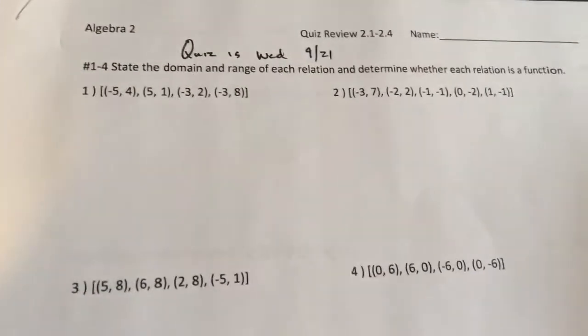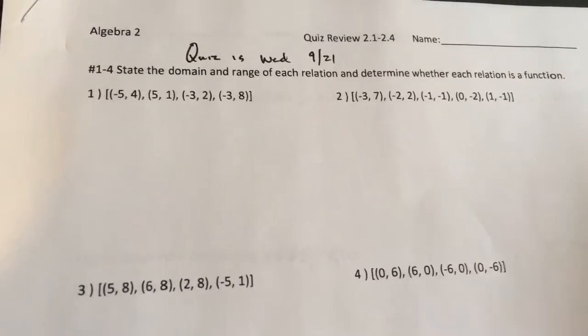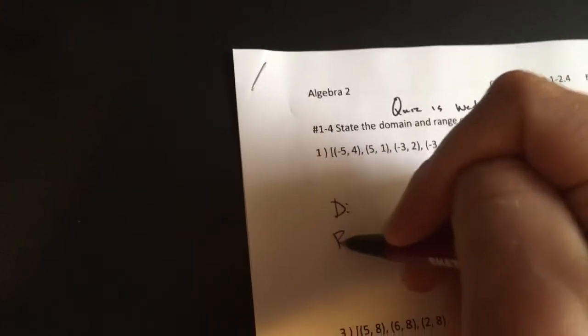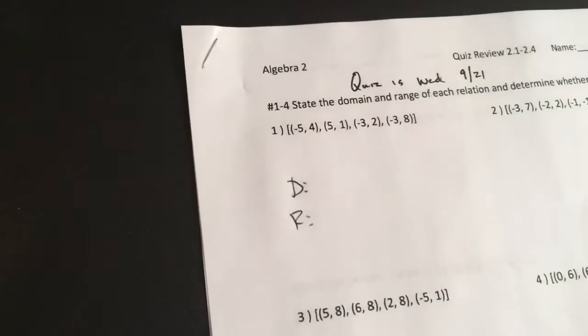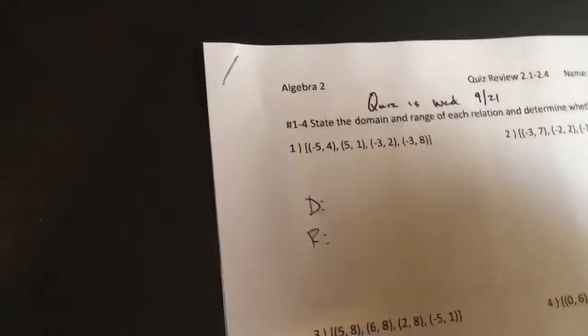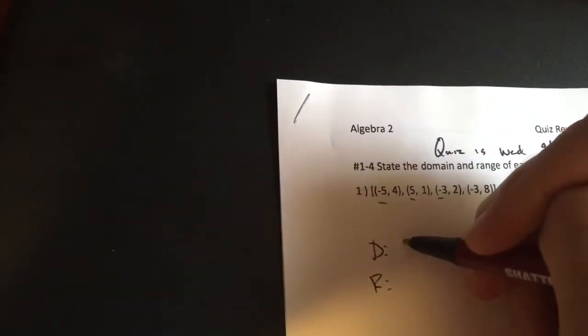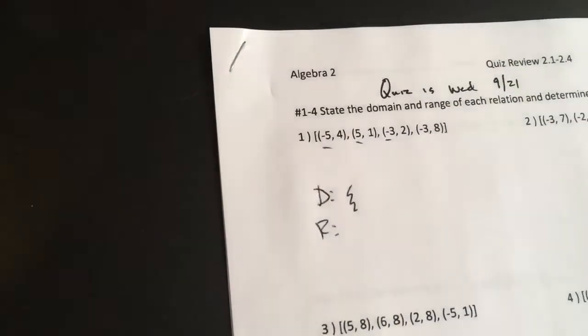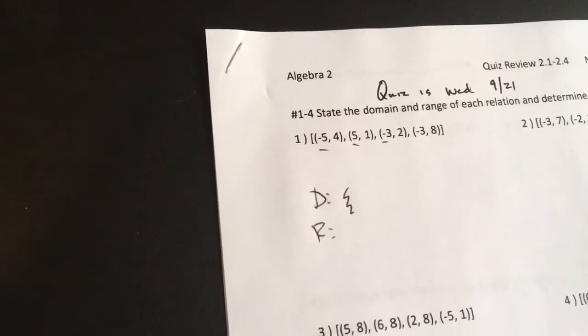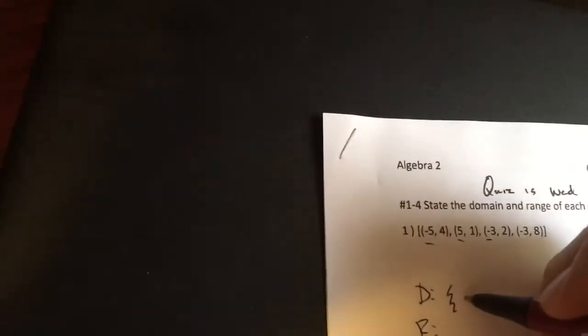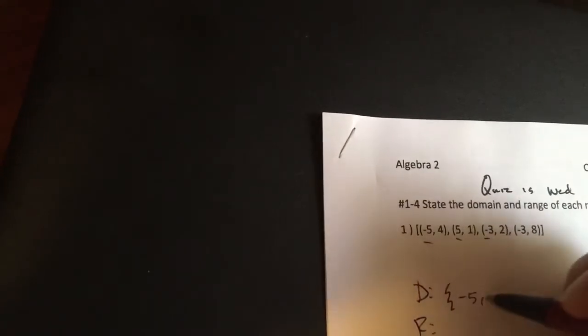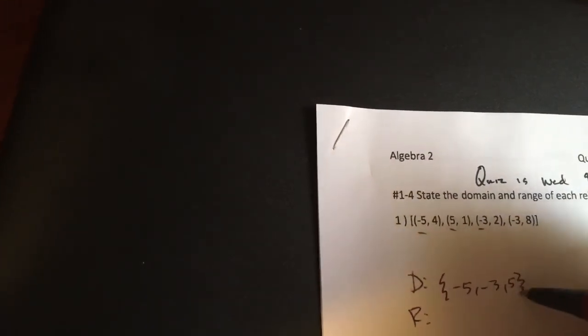State the domain and range for each function and determine whether or not that relation is a function. First off, folks, the domain is all of the unique x values. So we got negative 5, 5, and negative 3. So I'm going to make a little set right there. I'm going to put these in order, least to greatest. So I'm going to say negative 5, negative 3, and 5.